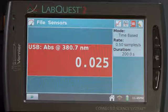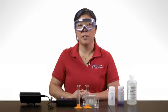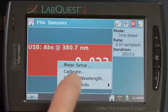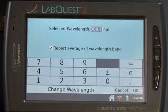Check the wavelength displayed in the meter box. If you need to change it, tap on the meter box and choose change wavelength. Type in the wavelength you want and tap on OK.